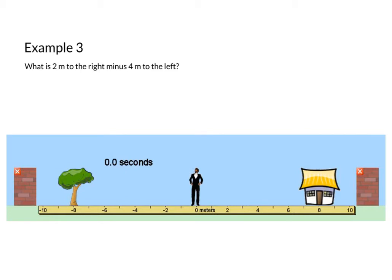So example 3. What is 2 meters to the right minus 4 meters to the left? I'm gonna circle that minus because that is super important. So the real trick is when we subtract one vector from another, what we're gonna do is just flip the direction of our second vector, the vector being subtracted.